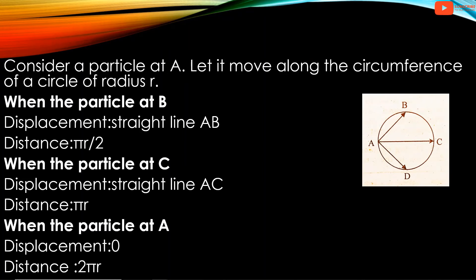At C, the object has traveled a distance of pi*R, which is half the circumference 2*pi*R. The displacement at C is AC. When the object returns to A, the displacement is 0, because the initial position and final position are the same. The distance traveled is 2*pi*R.